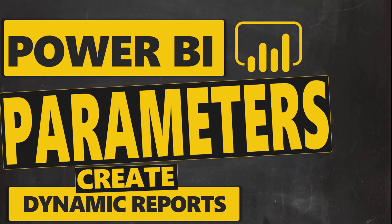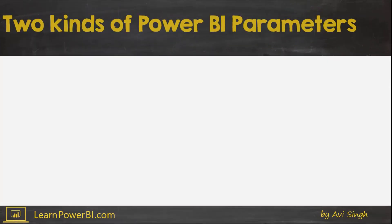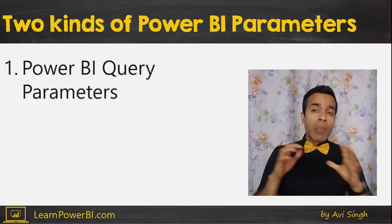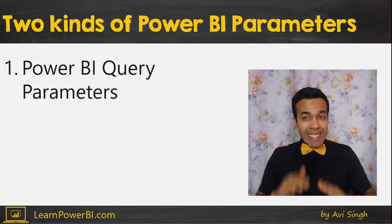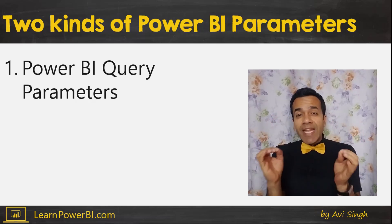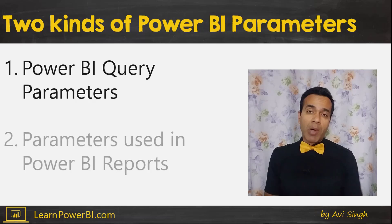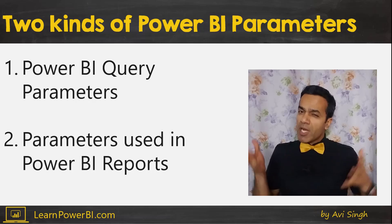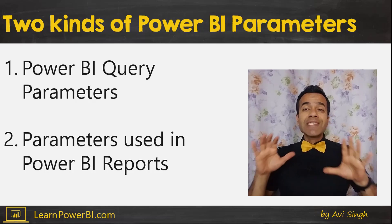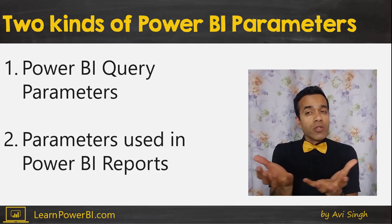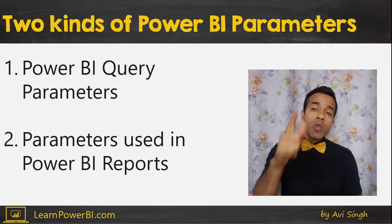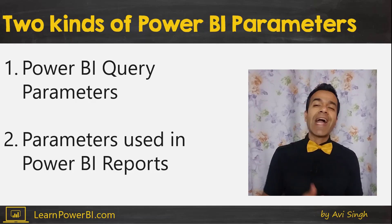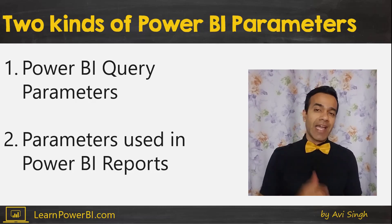Let's talk about Power BI parameters. Did you know that there are actually two kinds of Power BI parameters? One are the Power BI query parameters — by changing these, you can change the data that is loaded in your Power BI model. Two are the parameters used in Power BI reports — by changing these, users can change what is shown on the report dynamically. We will cover both and also tell you when it's best to use which approach.